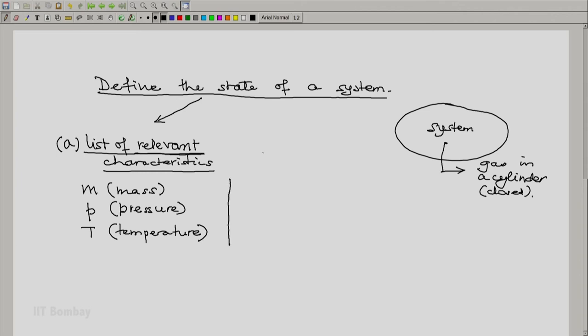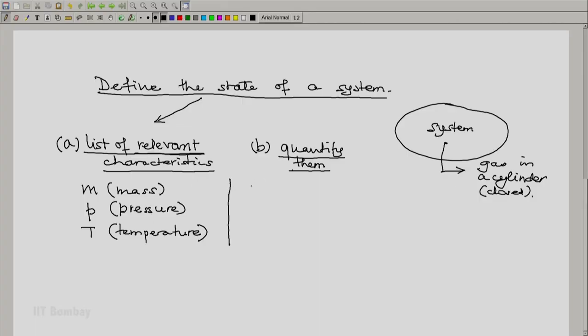So, after making a list of relevant characteristics, second operation is to quantify. By quantification, we mean measure or by hook or by crook somehow put a value on each of these relevant characteristics. For example, we may measure the mass of the gas at say 20 kilograms. We may measure the pressure using a pressure gauge connected to the cylinder at say 20 bar. And we may determine that the temperature is 14 degrees C, perhaps a cold winter day.